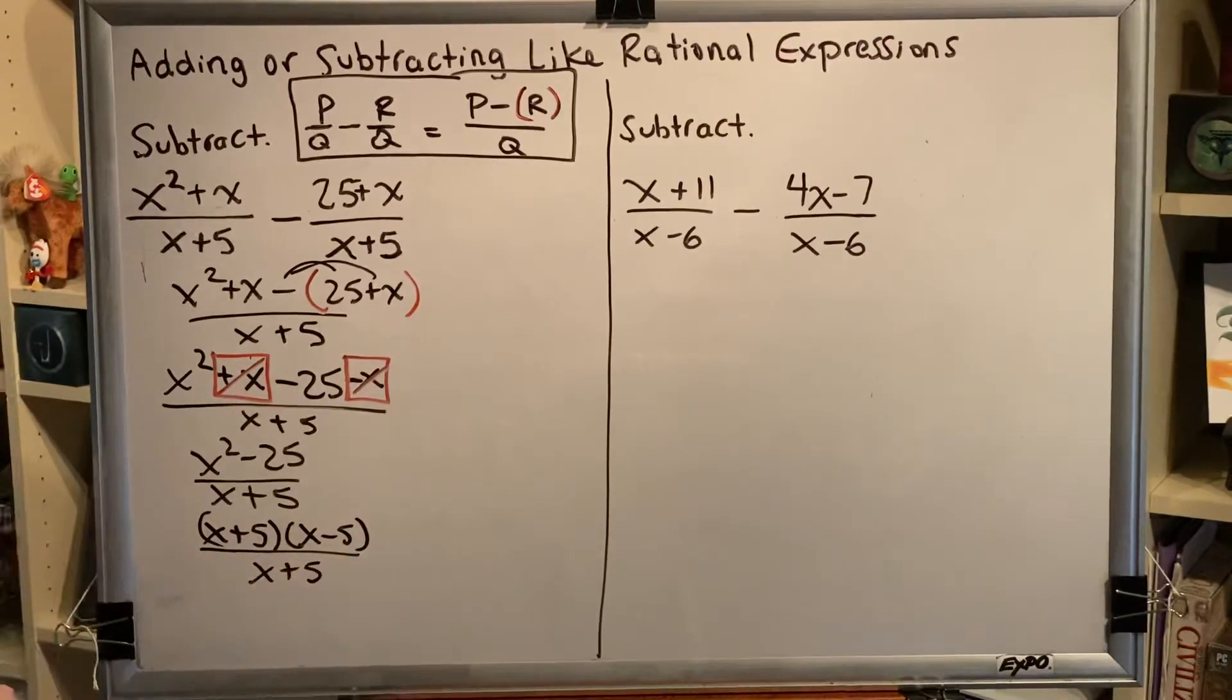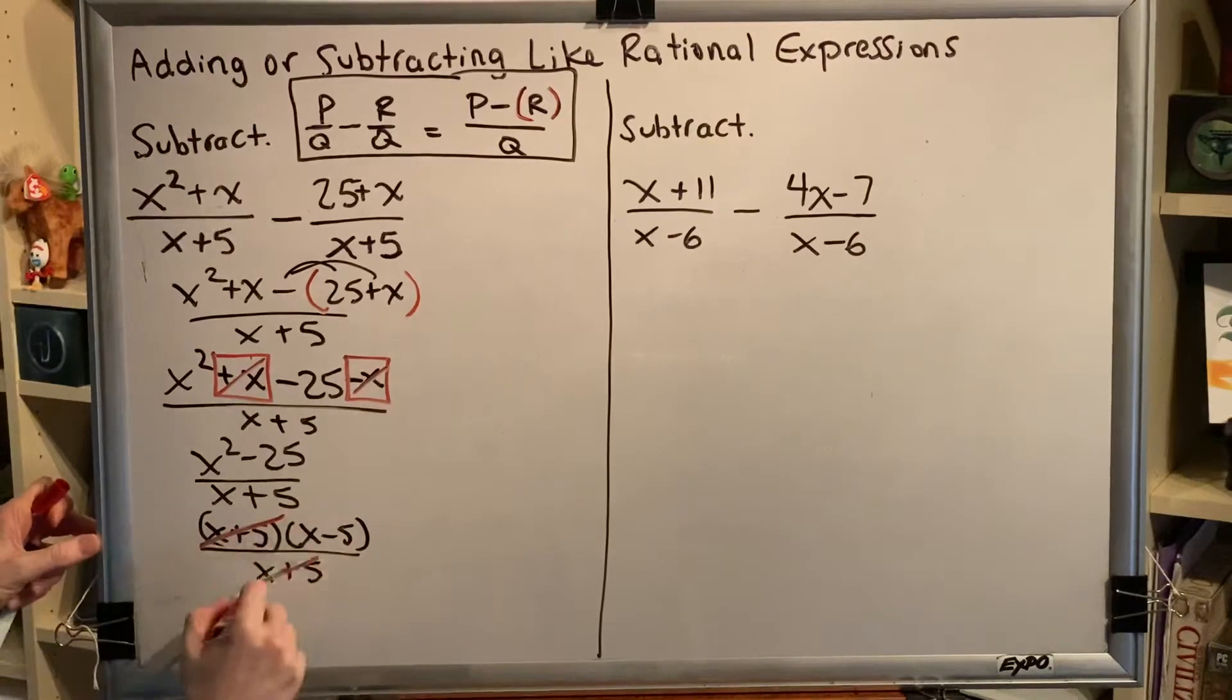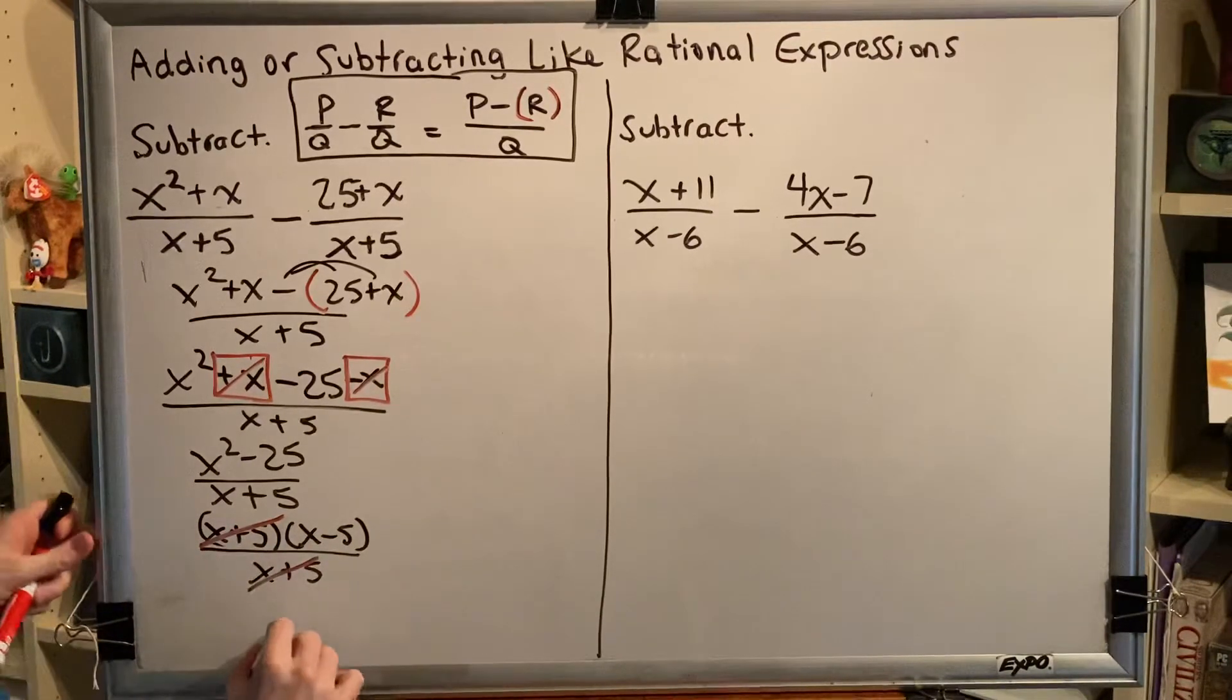Canceling the common factor to 1, here and here, leaves us with our final answer x minus 5.